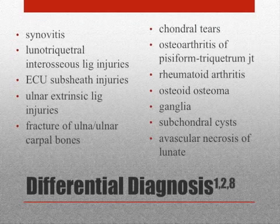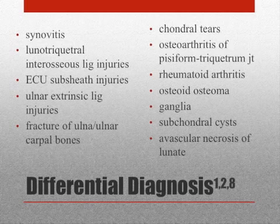Here is a short list of the differential diagnoses of the TFCC and its injuries. Park et al. states this to be the low back pain differential diagnosis of the wrist. The TFCC is part of the distal radial ulnar joint, and studies have shown that after a distal radius fracture, there is a 60–84% chance that the TFCC and DRUJ are injured as well. When going through the exam, keep in mind the possibility of a TFCC tear when there is a fracture, and vice versa.